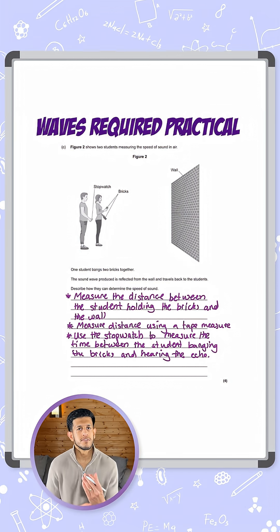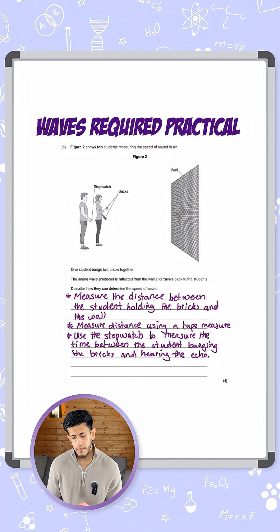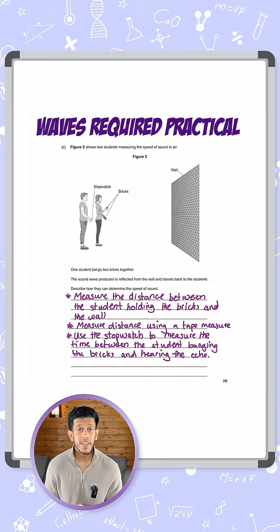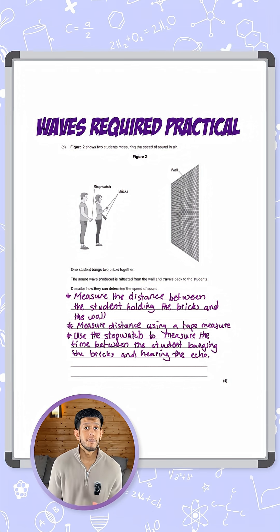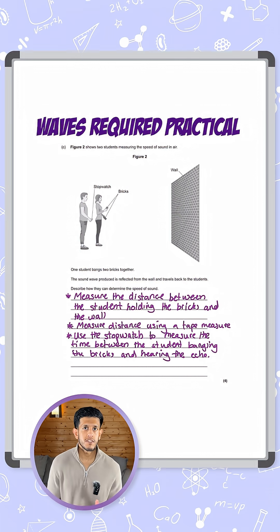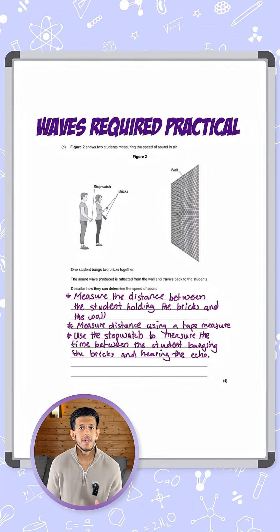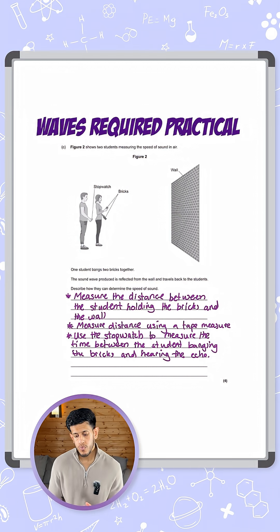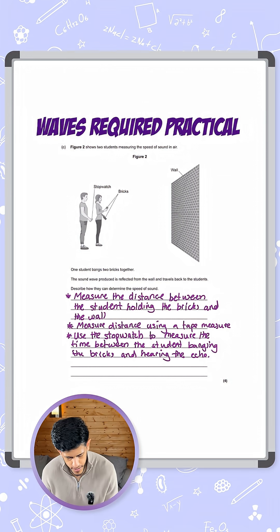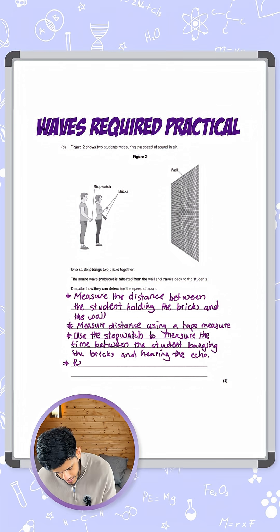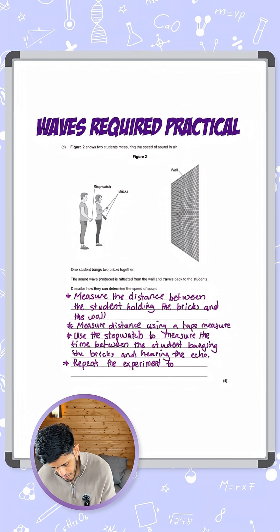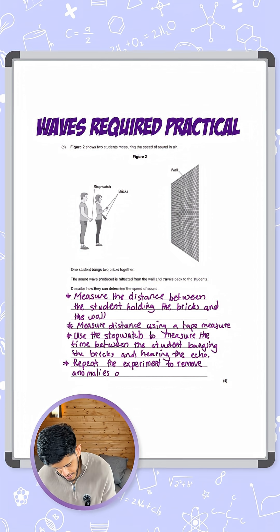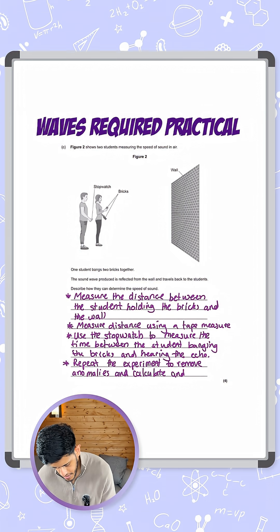They may not start the stopwatch at the correct time. They may miss the echo. There could be issues in this experiment. So it's important to mention that we're going to have to repeat the experiment for two reasons. One is to calculate an average, and number two is to avoid any anomalies. So I'll say repeat the experiment to remove anomalies and calculate an average time.